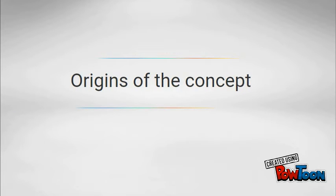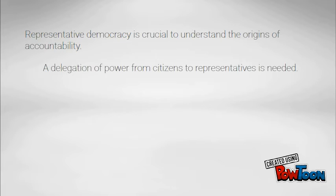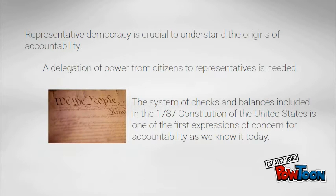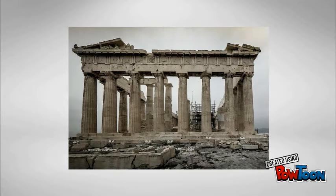Now let's talk about the origins of the concept. Representative democracy is crucial to understanding the origins of accountability because the integration of power from citizens to representatives is needed. The first expression of concern for accountability as we know it today is in the US 1787 Constitution. However, proto-mechanisms of accountability existed in Athenian politics, which included, for example, provisions for a mechanism similar to today's vote of confidence.